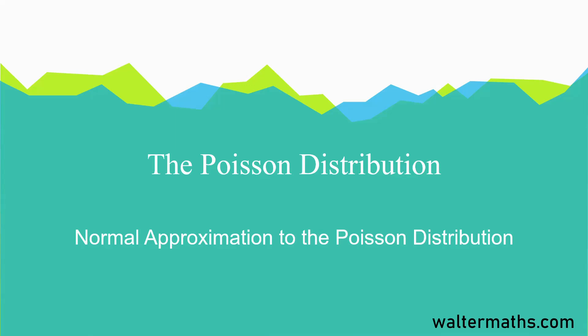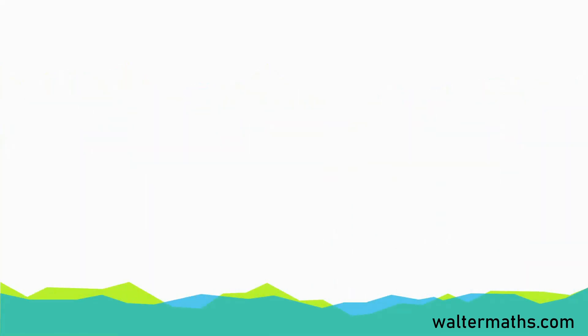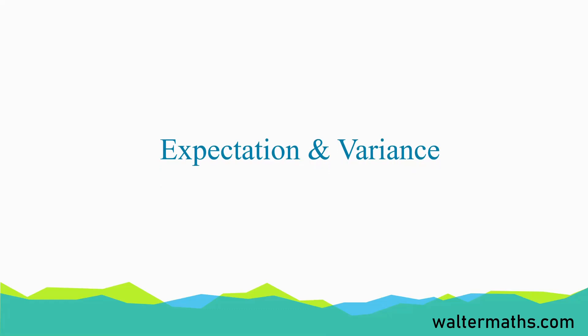In this lesson, we're going to be talking about the normal approximation to the Poisson distribution. But before we get into that, let us start with finding the expectation and variance for the Poisson variable.